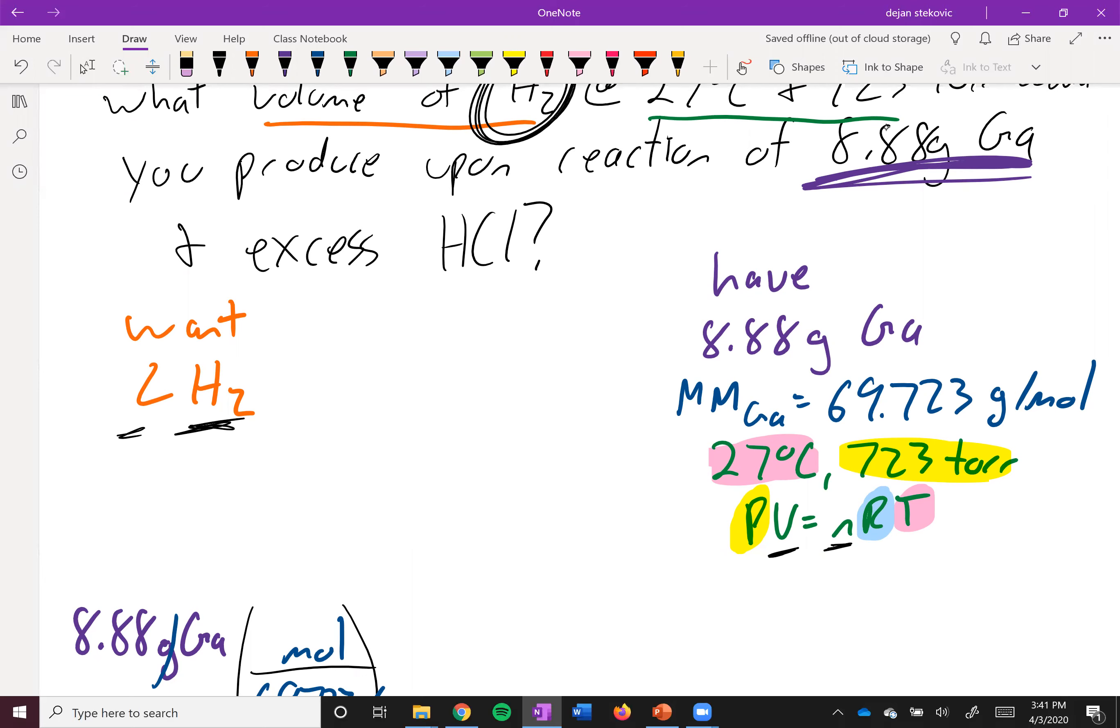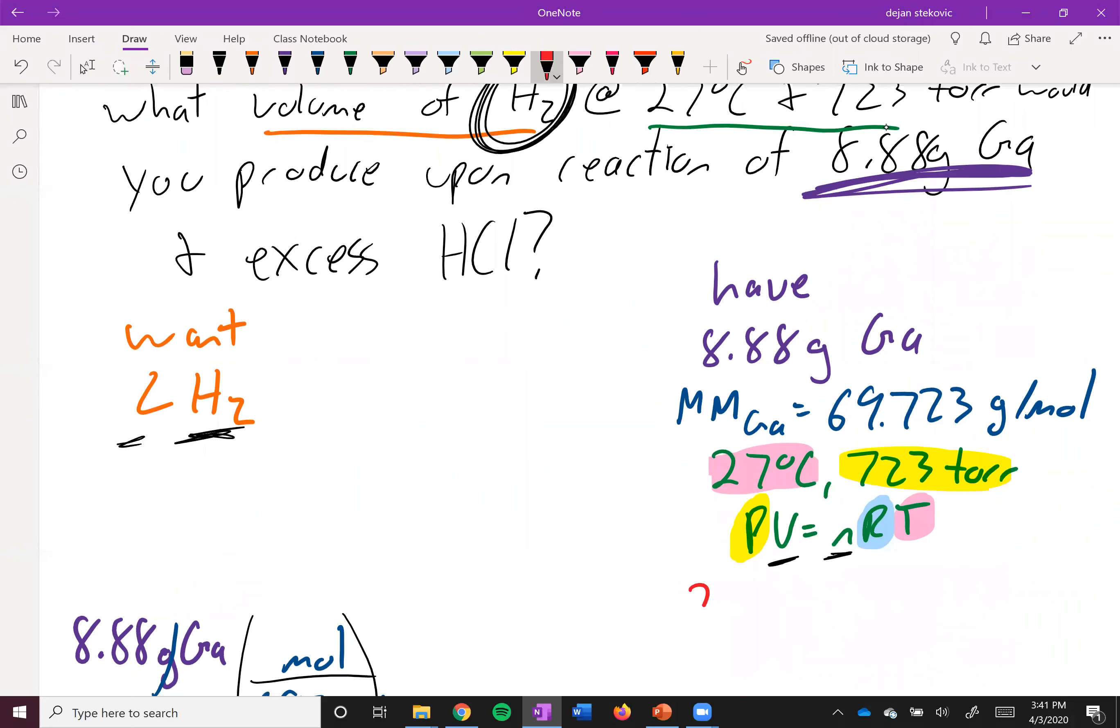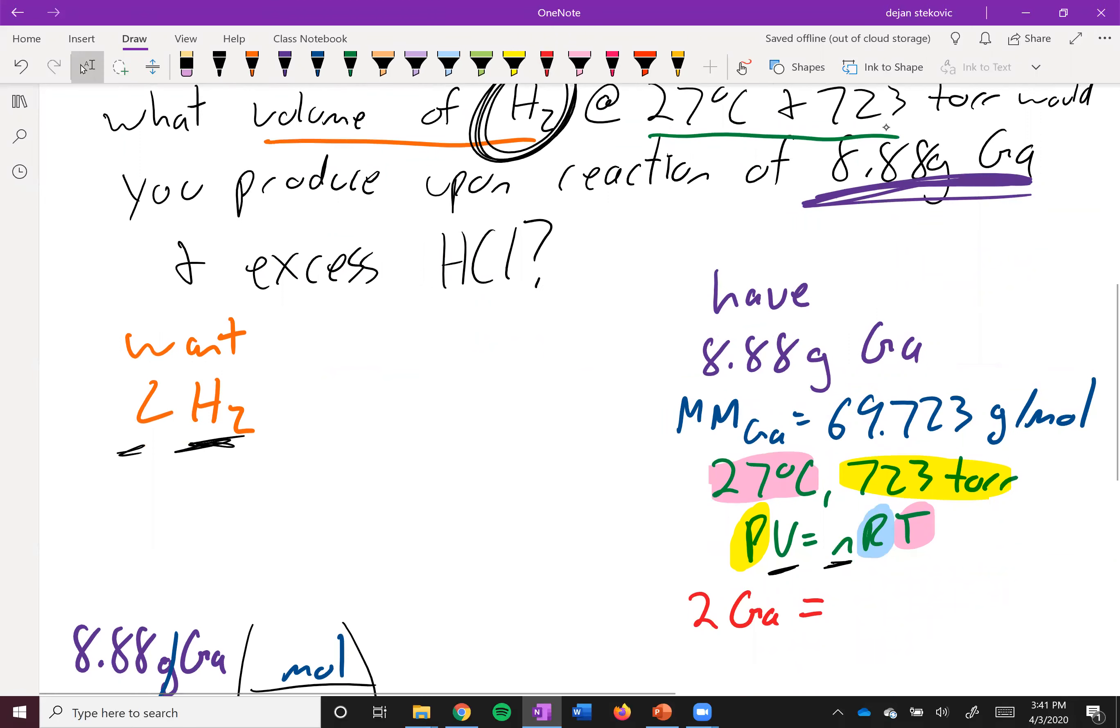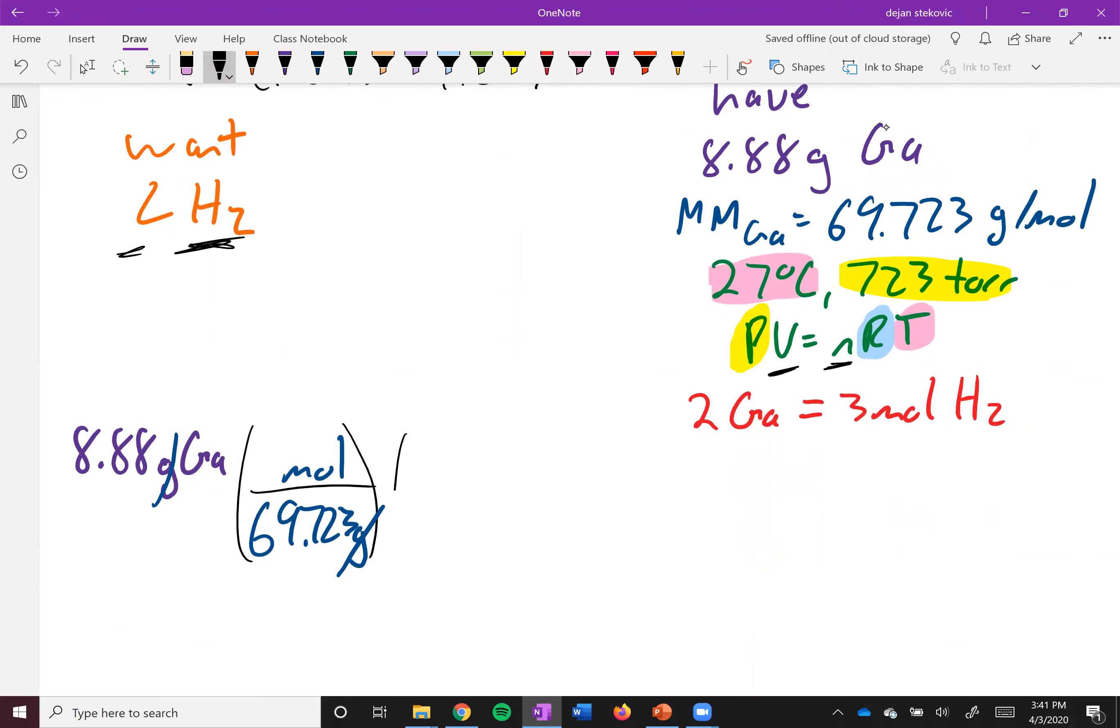So two, oh, that's pink. So two galliums or two moles of gallium is equal to three moles of H2. So let's go ahead and use that so we can get to our H2.